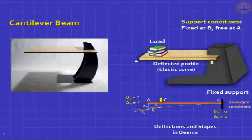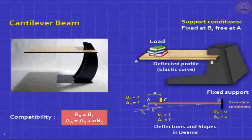The question we would like to know: how much did the beam deflect at the free end A? What was the rotation? We have something called compatibility, which relates slopes and deflections at different points in the beam. Since AC remains straight, theta_A equals theta_C. For small deformations, tan theta approximates to theta. You can show that delta_A equals delta_C plus the distance AC times theta — a very simple calculation.